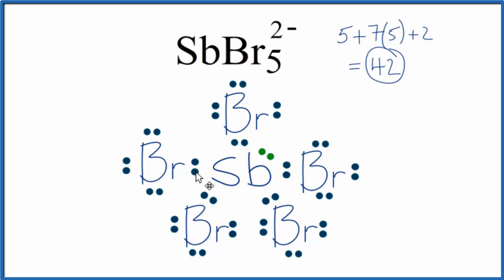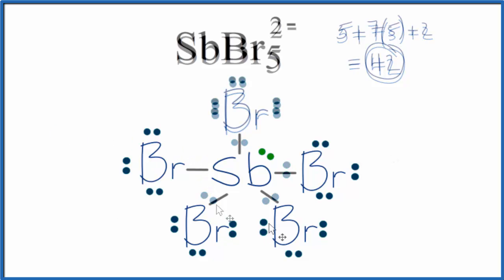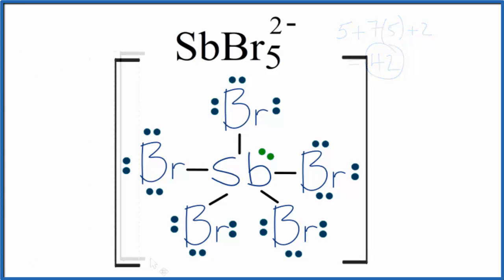We could replace these electron pairs that are in the bonds with lines, that might be a little clearer. We also need to put brackets around this because it's an ion. And then we'll put that 2- here on the outside. So this is our Lewis structure for SbBr5 2-.